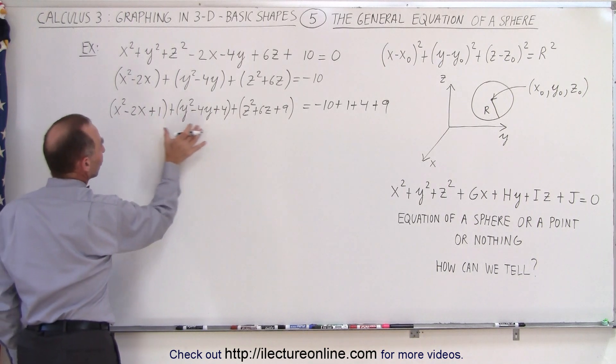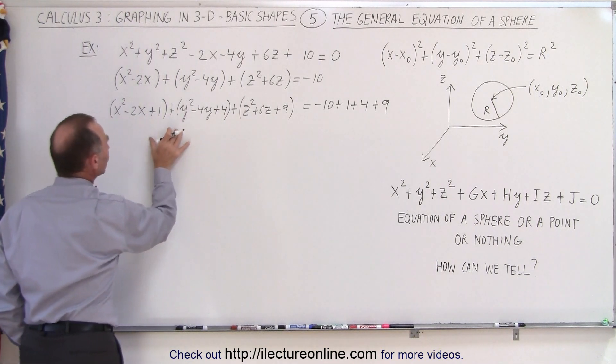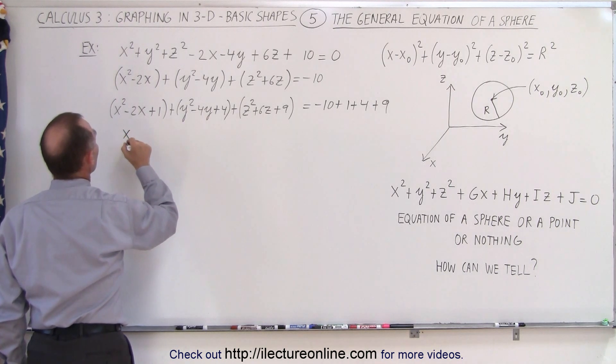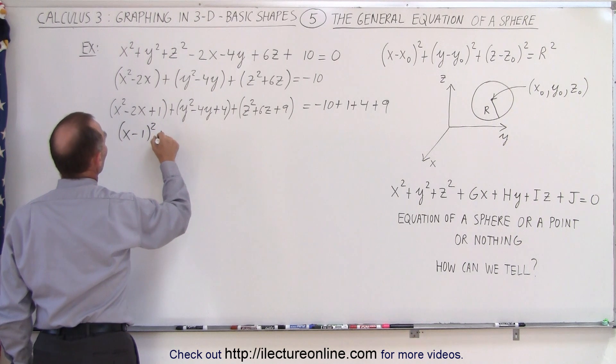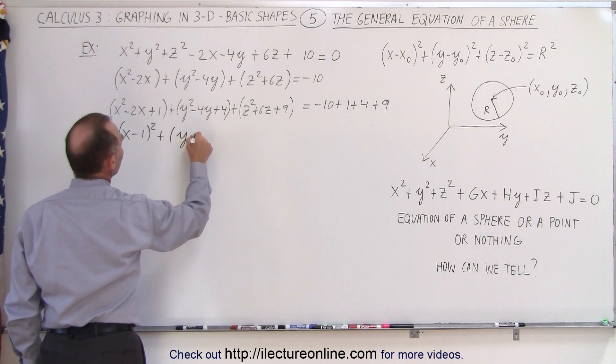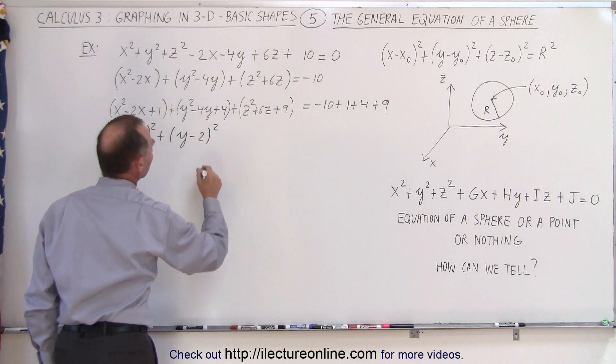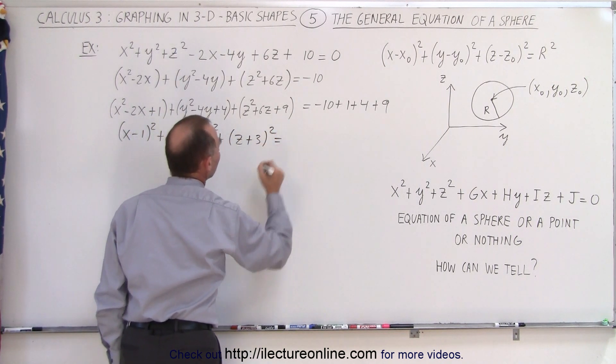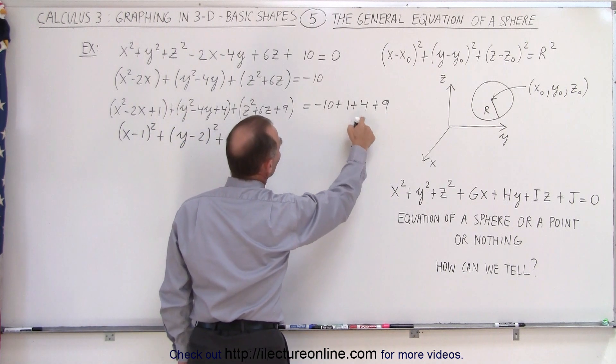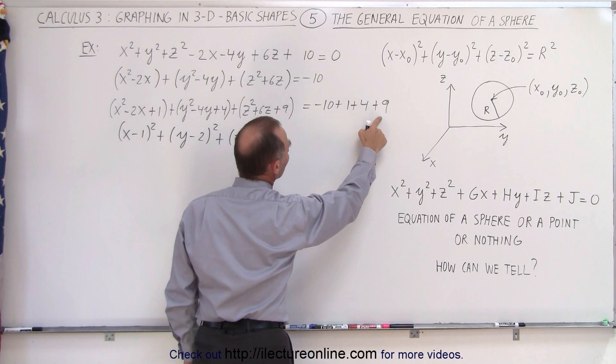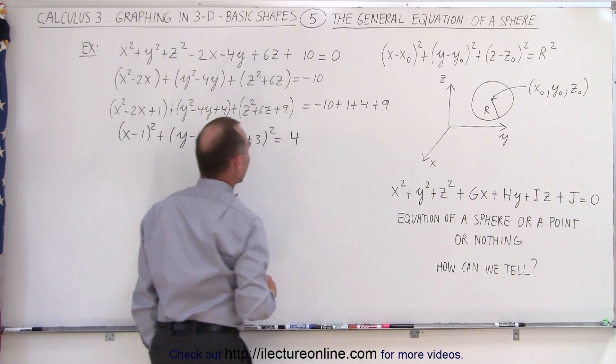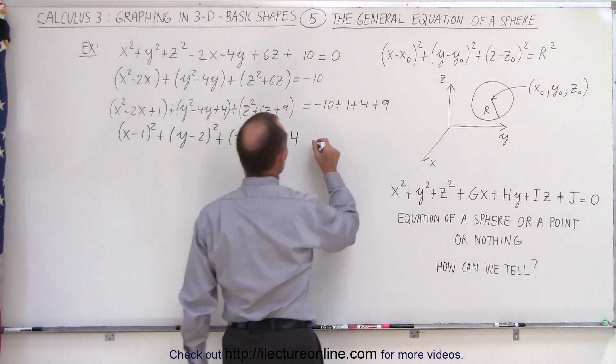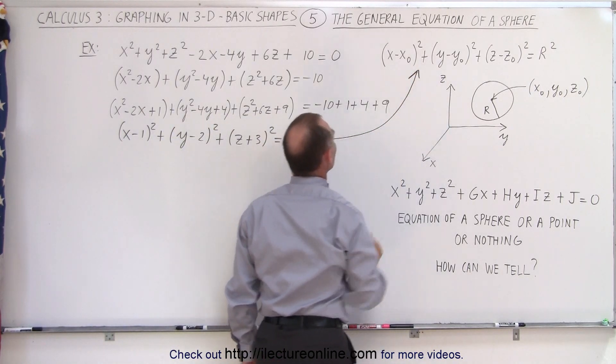So now you see that we have three trinomials that we can easily factor. So this can be written as x minus one quantity squared plus y minus two quantity squared, and this becomes plus z plus three quantity squared is equal to, that would be ten, nine, that's zero, that's plus four.